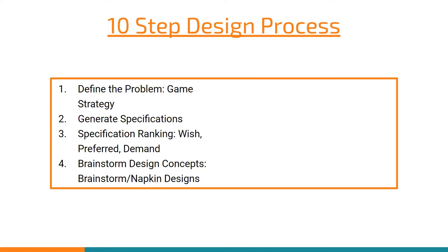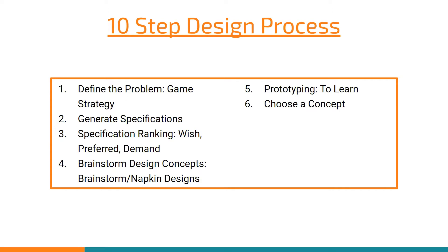Then we brainstorm all the ways this can be solved. It's important when generating specifications not to identify how it's done, just what can be done. Step four is when we identify how it can be done for the first time. Then we begin to prototype ideas — we make them often out of wood because it's easy to work with, but prototypes can be made out of anything. They're quickly made, we learn concepts, they are for learning, and prototypes will never go on the robot. Then we choose the best prototype and the concept that we like.